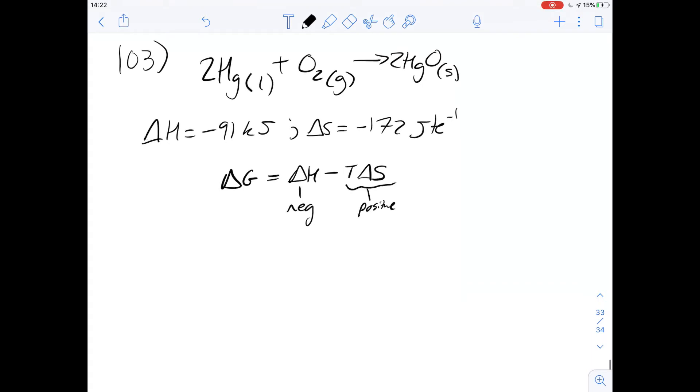If it is very, very, very hot, and the entropy change, and therefore this side of the equation will be more positive than this is negative, it means overall delta G would be positive. So there's a temperature above which this reaction wouldn't happen. And that means the answer for question 103 is going to be G. This reaction may only occur spontaneously for temperatures below a certain maximum value.